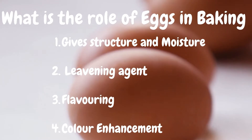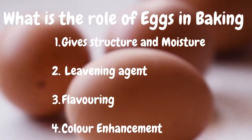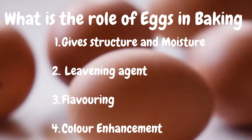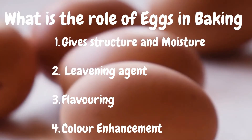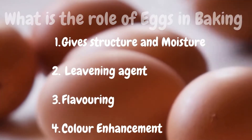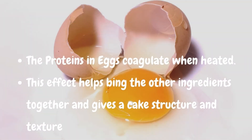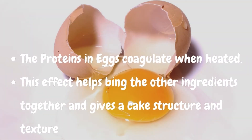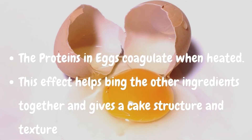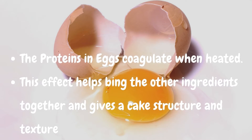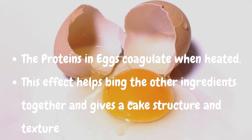What's the role of eggs in baking? It helps to give your cake structure and moisture. It's also a leavening agent and it has a flavouring effect as well as colour enhancement in your cakes and baked goods. Egg has proteins that coagulate when heated, and that helps to bring together the other ingredients in your cake and give your finished cake structure and texture.